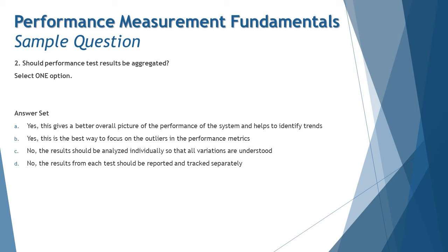Option B: yes, this is the best way to focus on the outliers in the performance metrics. This is not correct because aggregating results will eliminate the information on the outlier, just like what we discussed for option A.